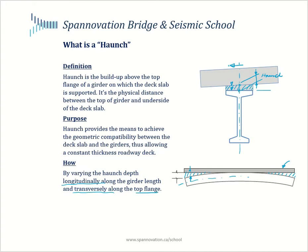In the cross section you'll notice that the haunch bottom surface is level just like the girder top flange, whereas the top surface of the haunch follows an inclined geometry to mimic the inclination of the deck slab. Similarly, longitudinally the thickness of the haunch would vary to fill in the necessary gap, and this prevents us from having to thicken the entire deck slab, adding a significant amount of redundant and unsustainable material.